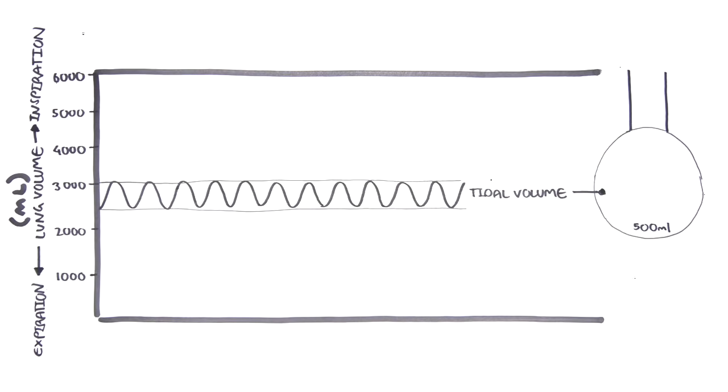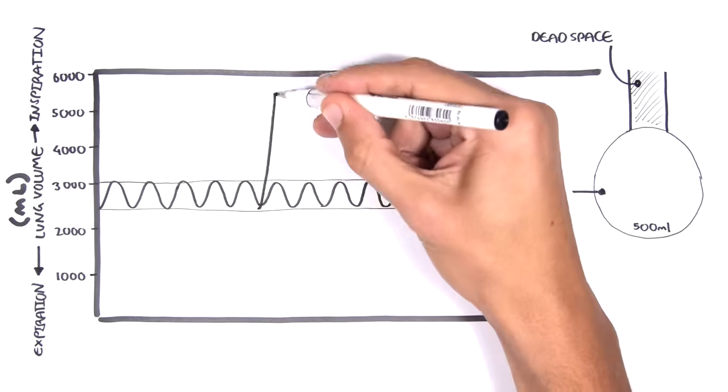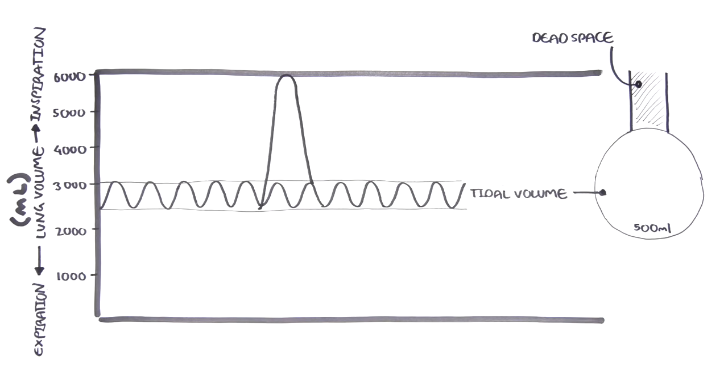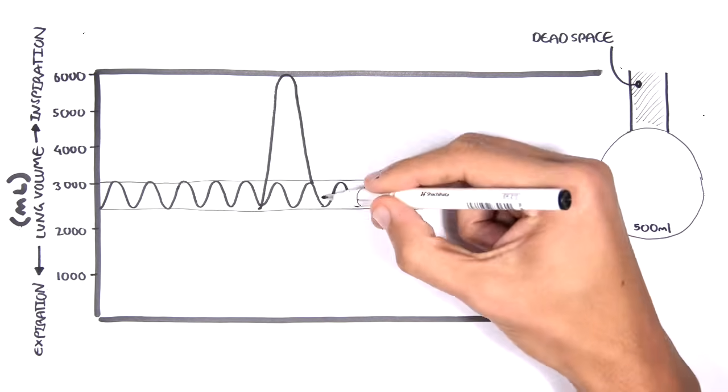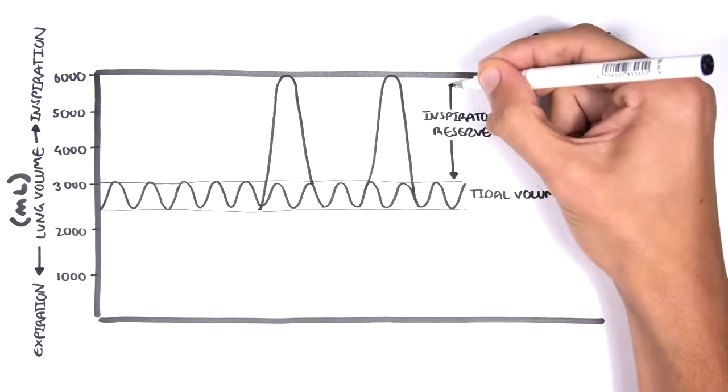Remember the dead space. We are not talking about this area because it has no role in gas exchange. Let's just say we are breathing normally and then suddenly take the biggest breath in. This is the inspiratory reserve volume and can get up to 3 liters in addition to the tidal volume.